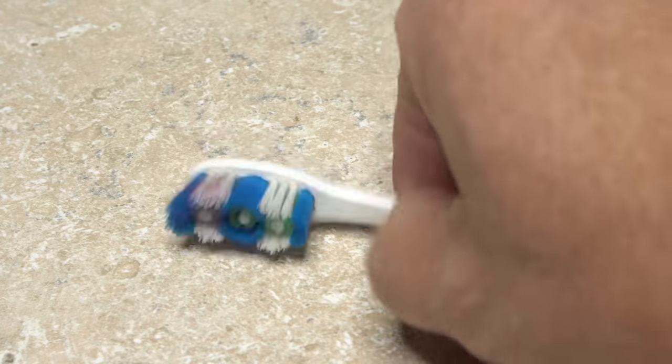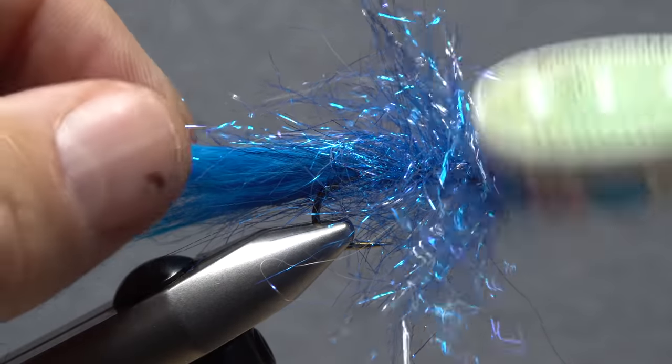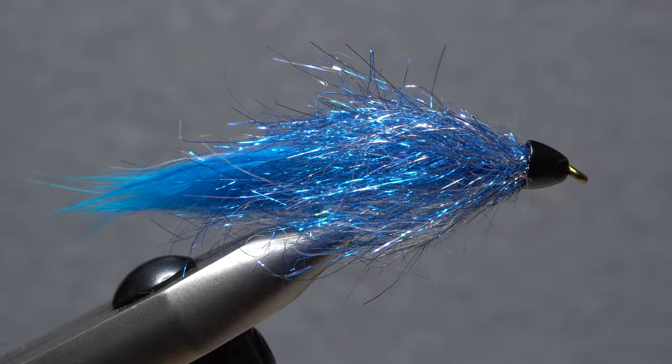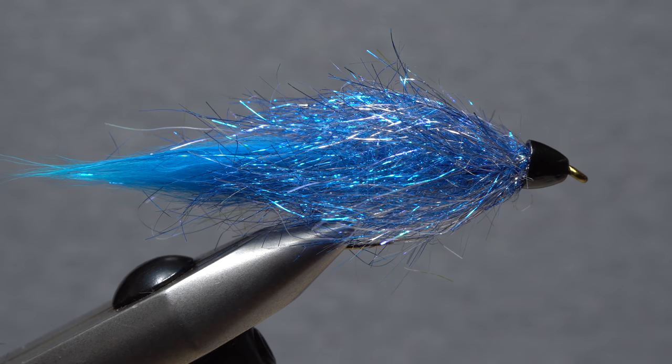Get hold of that toothbrush one more time and give the entire fly a good teasing out to free any trapped fibers. If there's some truly wonky or long ones, simply trim them off.